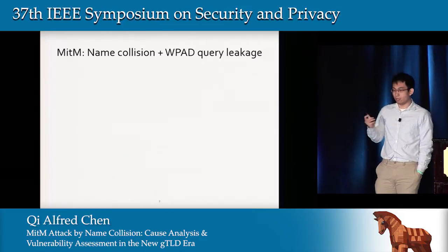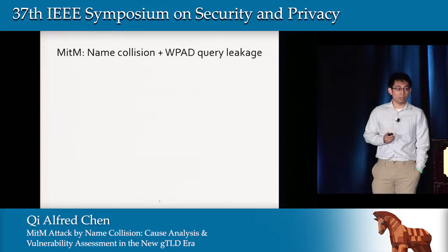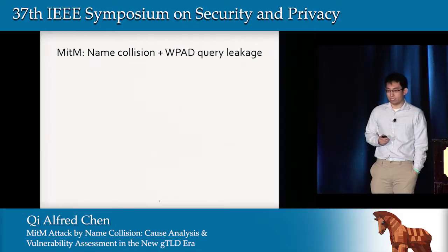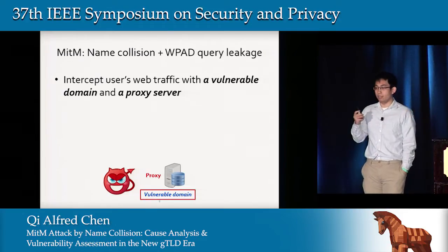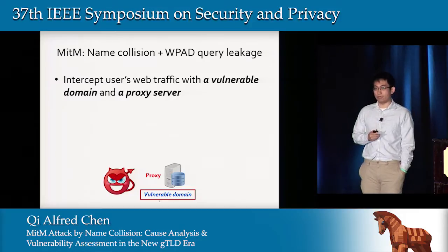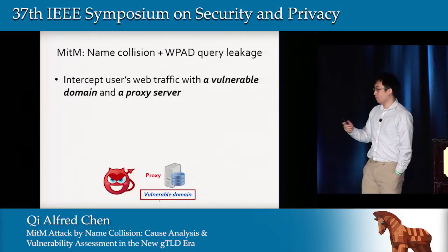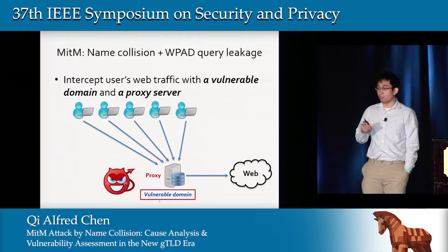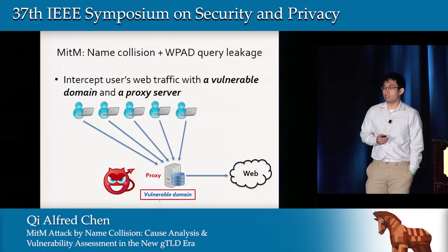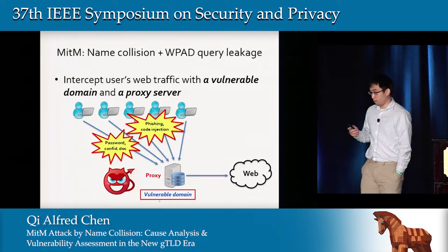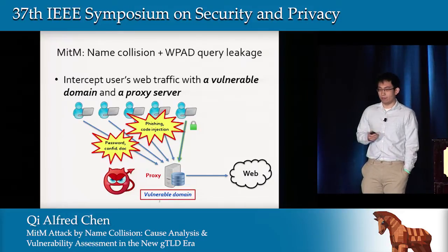In our work, we study a newly exposed man-in-the-middle attack due to two phenomena: name collision and WPAD query leakage. At a high level, an attacker just needs to register a certain vulnerable domain and configure a proxy server, and the web traffic of a large number of internet users can be automatically redirected to the attacker. With this, the attacker can steal sensitive data like passwords, do phishing attacks, code injection, and even if the connection is encrypted, use recently discovered downgrade attacks like FREAK or Logjam to read and modify traffic.